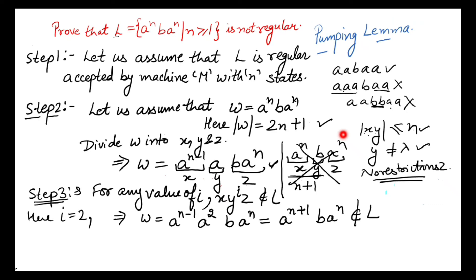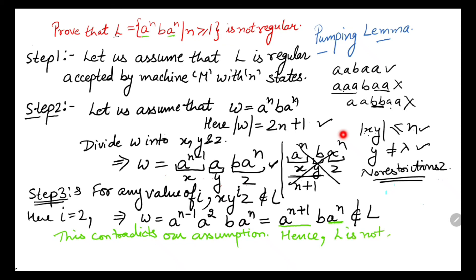This string does not belong to L because the number of a's before b is one greater than the number of a's after b. The given language requires that the number of a's before and after b is always the same. This contradicts our assumption. Hence the given language L is not regular. Basically what we need to do is understand the language and choose the right string. I hope this example is clear - if you have any doubts please mention in the comments below.